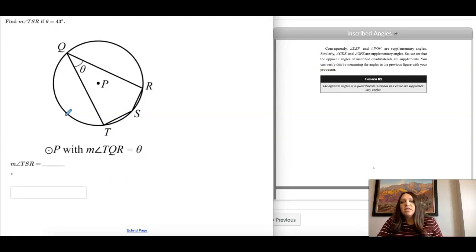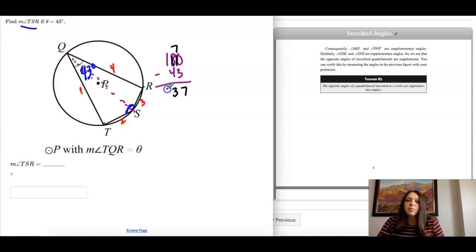So find the measure of TSR if theta is 43. So this is 43 degrees, and we're trying to find the measure of TSR right here. So again, we have a quadrilateral inscribed in a circle. One side, two sides, three sides, four sides. And these are opposite angles. So they add to 180. So I'm going to take 180 minus 43.